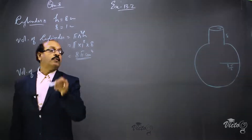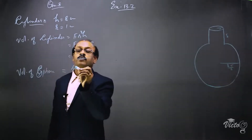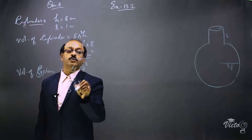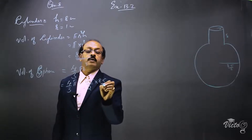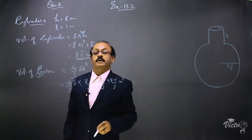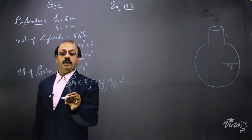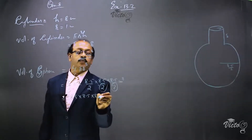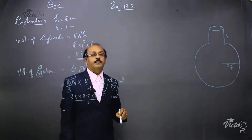Now the volume of the sphere. The formula is 4/3 pi r cubed, where r is 8.5 by 2. So the volume is 4/3 pi into (8.5/2) cubed. The 4 in the numerator and the 4 from 2 cubed in the denominator cancel, leaving pi into 8.5 cubed divided by 3 times 2, which simplifies to (8.5 × 8.5 × 8.5 × pi) by 3 centimeter cube.